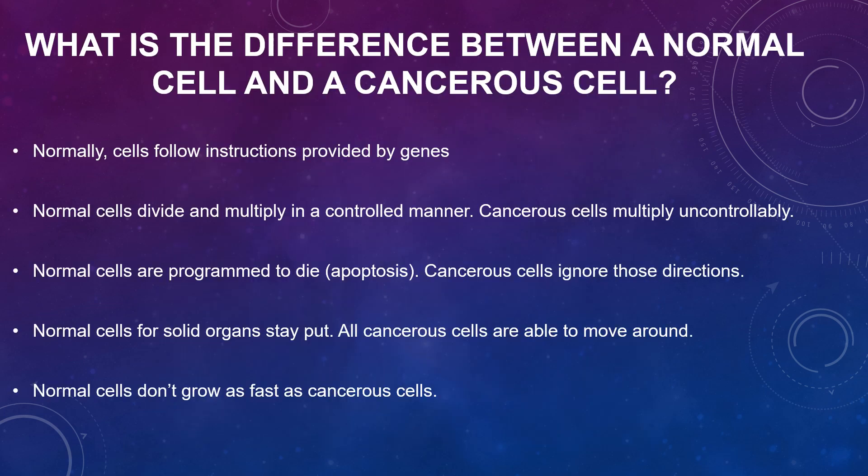Normally, cells follow instructions provided by genes. Normal cells divide and multiply in a controlled manner, whereas cancerous cells multiply uncontrollably. Normal cells are programmed to die in a process known as apoptosis, but cancerous cells ignore these directions. Normal cells in a solid organ stay in place, whereas cancerous cells are able to move around, and normal cells don't grow as fast as cancerous cells.